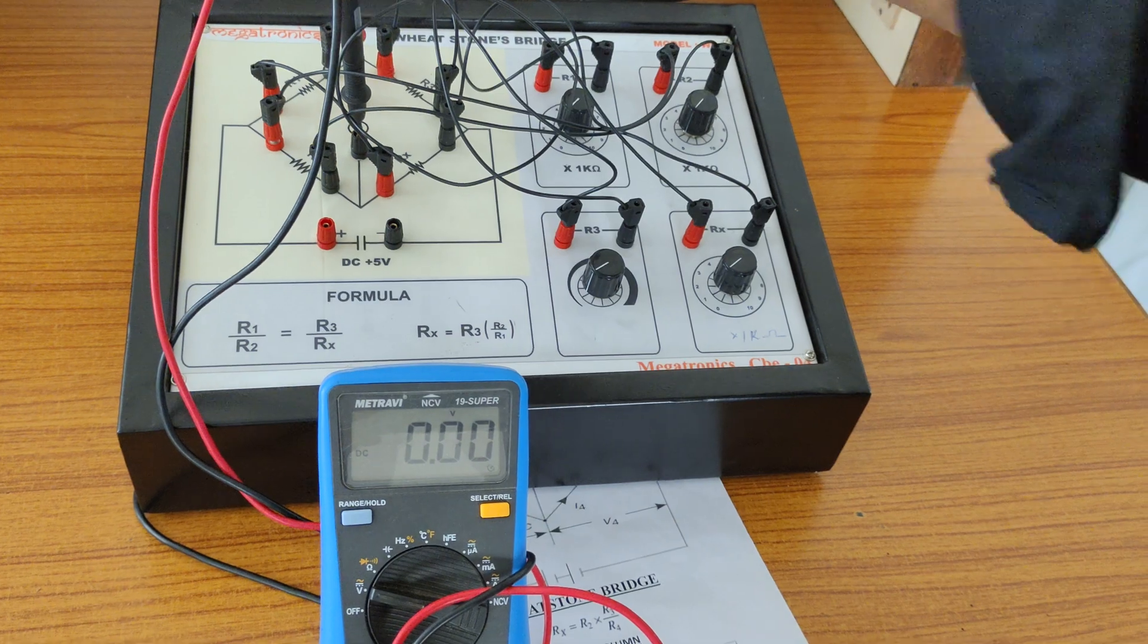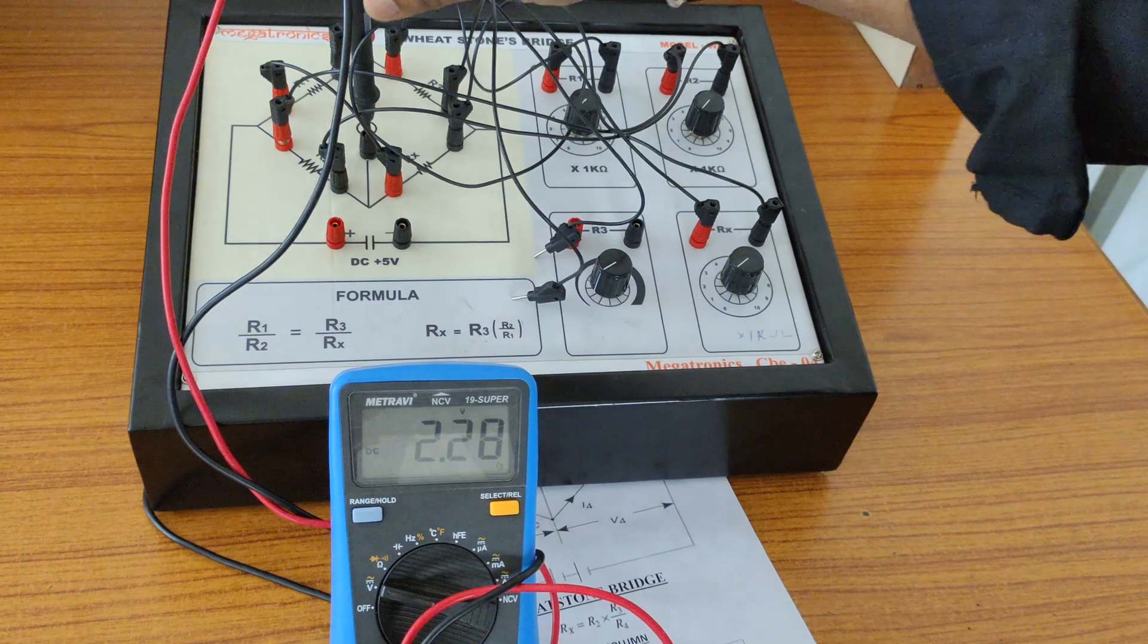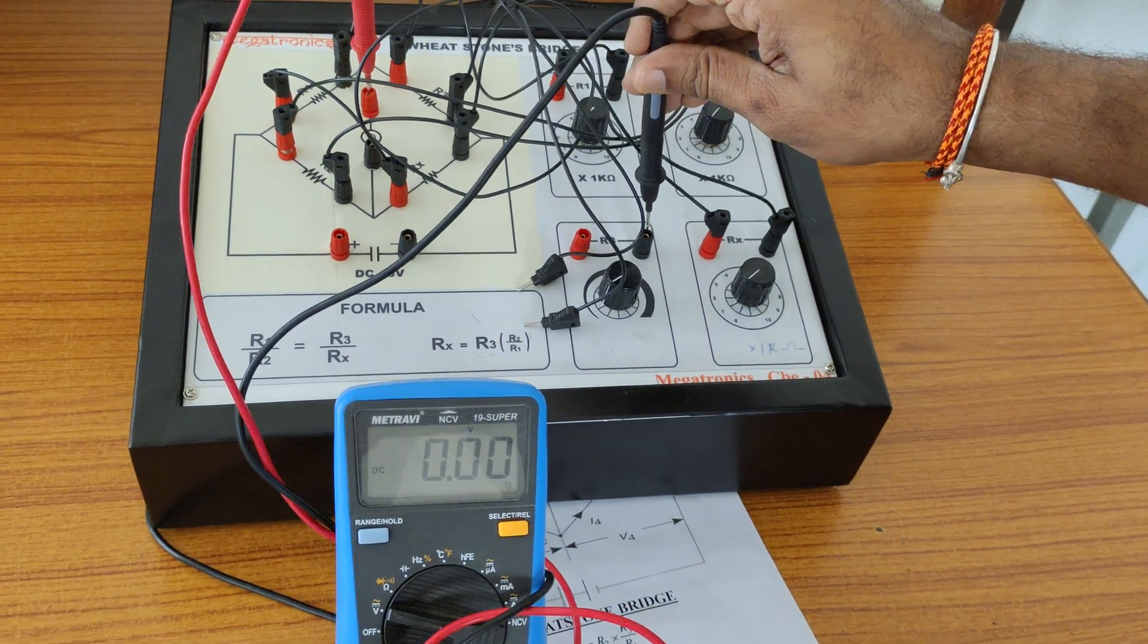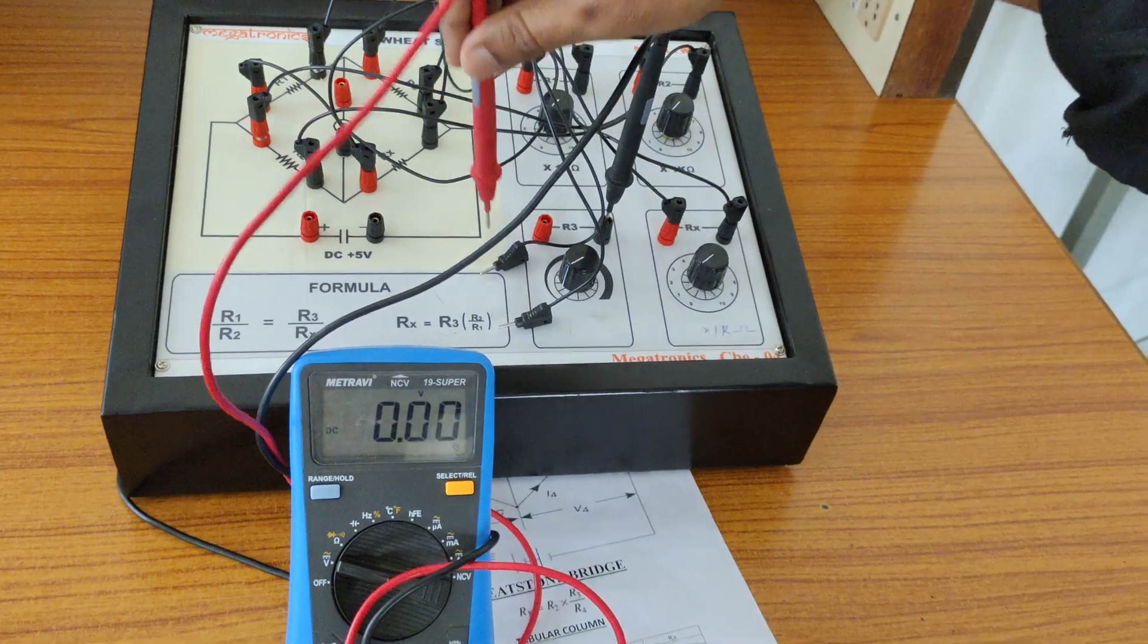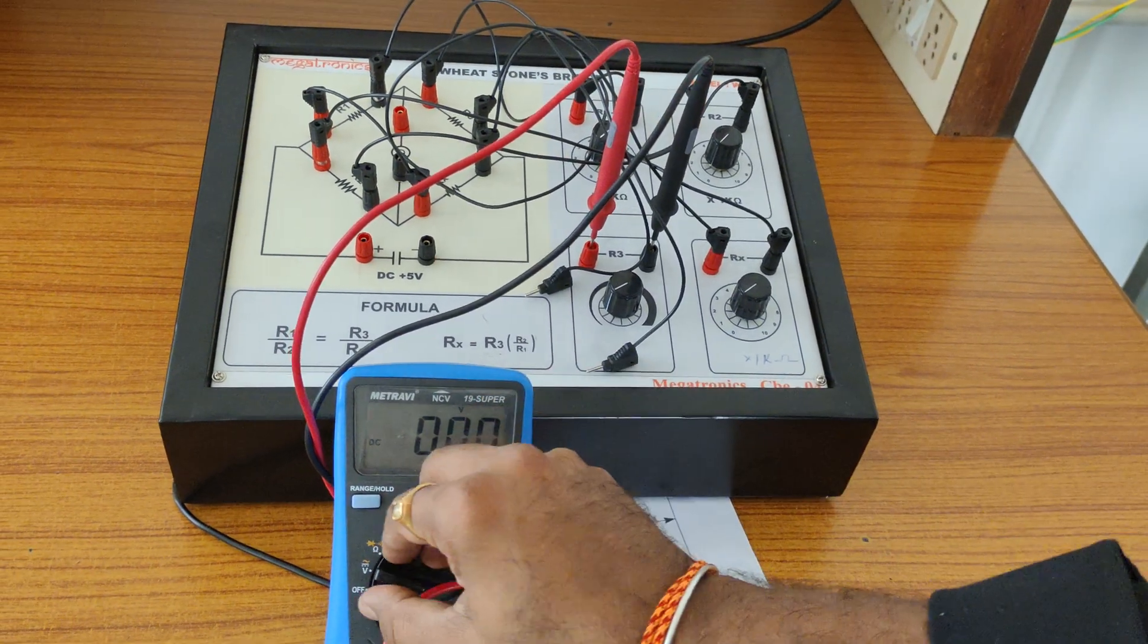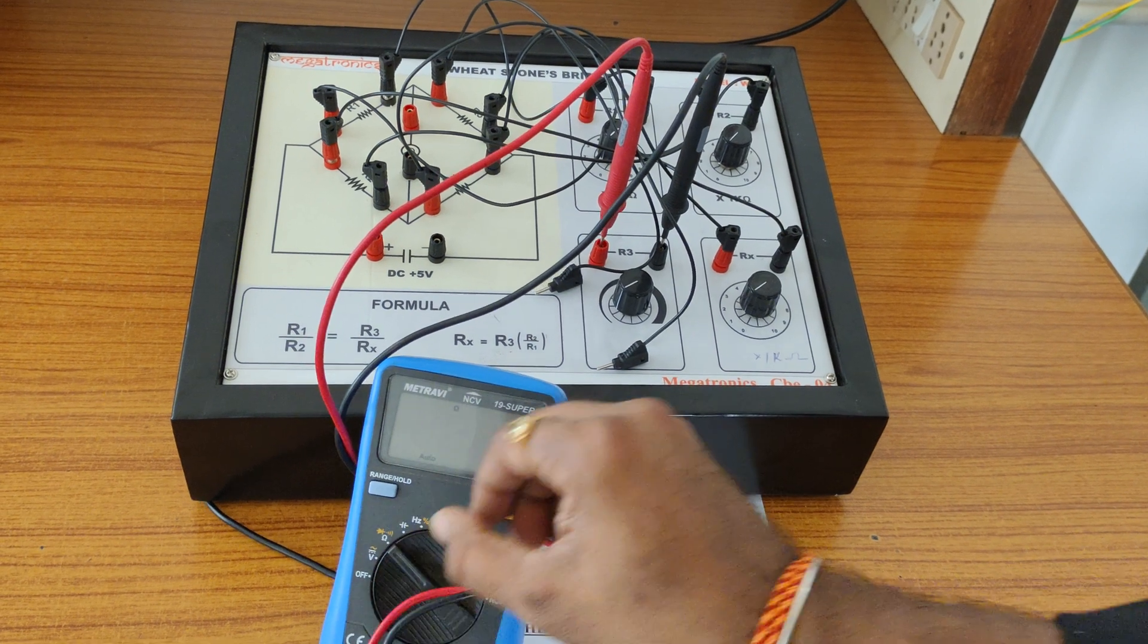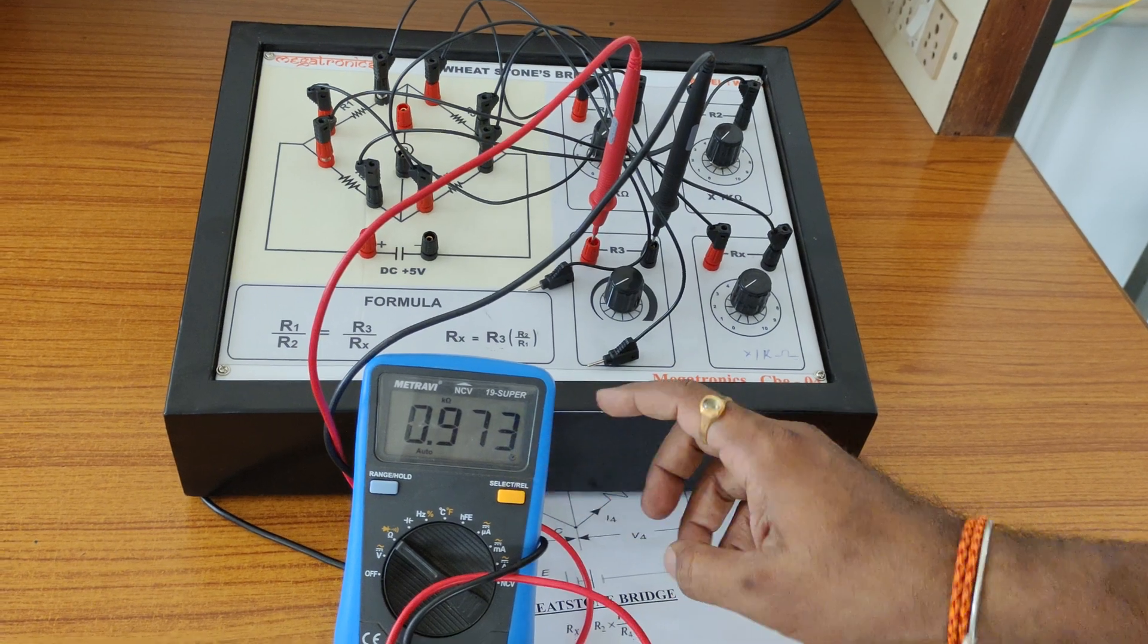Then we can observe those readings. Bring these two wires in order to observe the readings here right now. Remove these two things and insert this meter. What is the value of this unknown resistance? Change this now to ohms. Yeah, it's approximately 0.973.